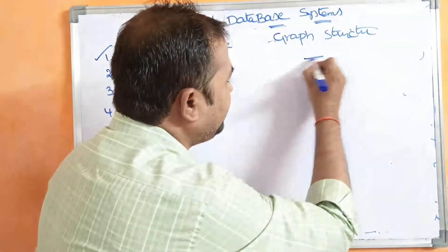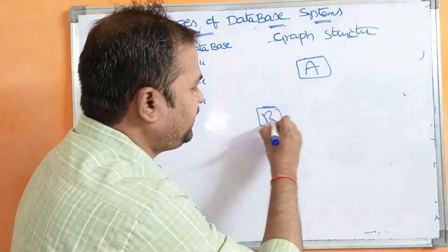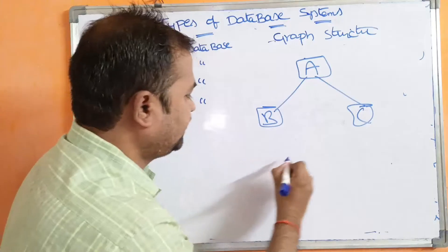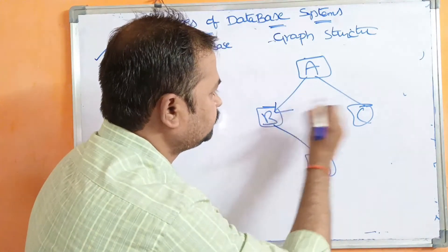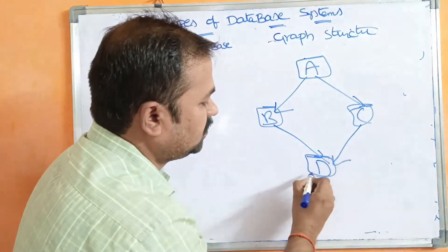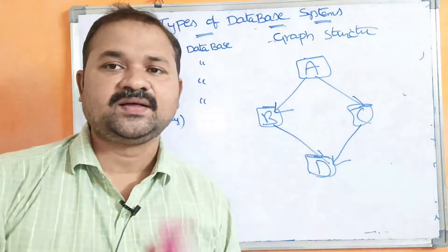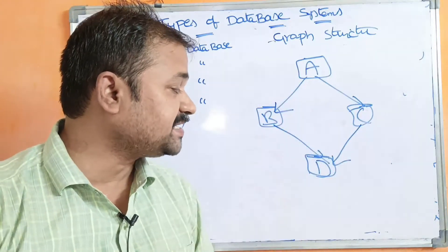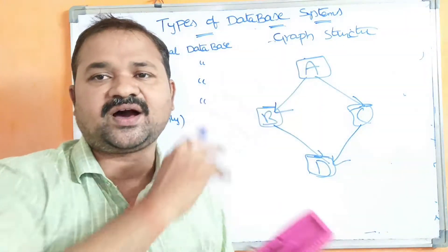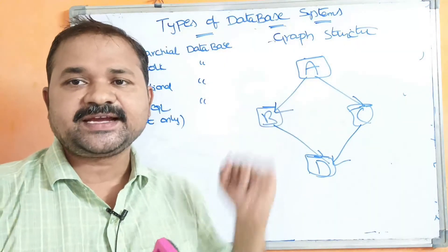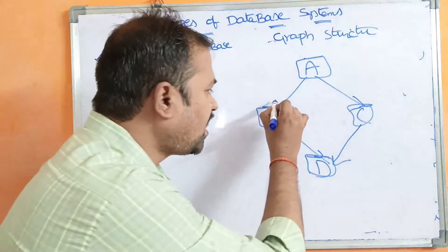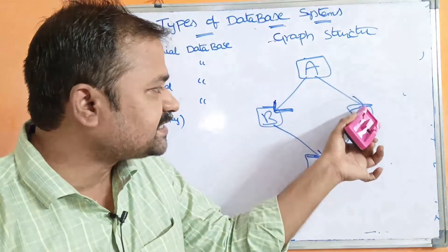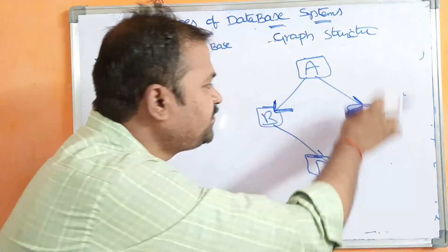In a graph, we can have nodes A, B, C, D and any number of nodes. All nodes are connected with the help of edges through arcs. An arc demonstrates an edge between A and B; another arc establishes an edge between A and C.